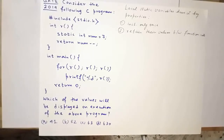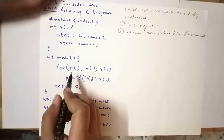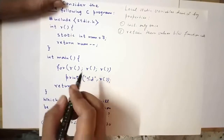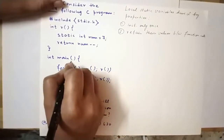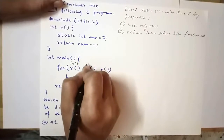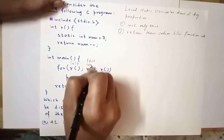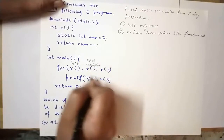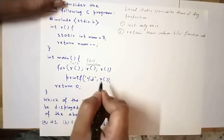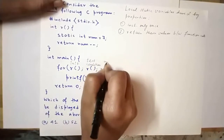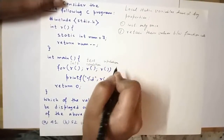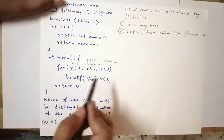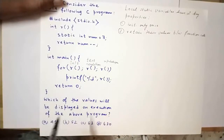Now let's move on to the output examination. We'll analyze the main function step by step. The first line is a for statement, which has three parts: initialization, test condition, and updation. As long as the test condition is true, the body of the loop — which contains only a printf statement — will be executed. Here we do not have a loop control variable; in all three parts we have calls to the function r.